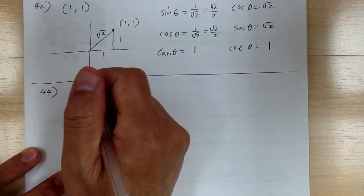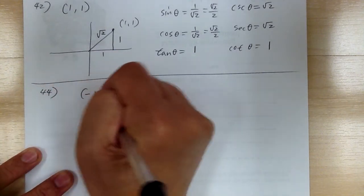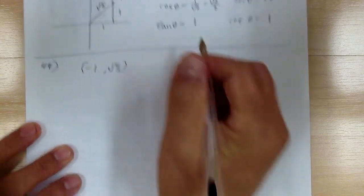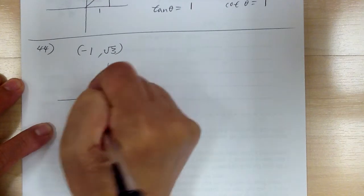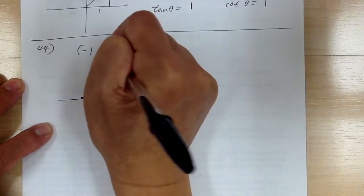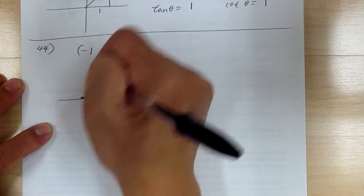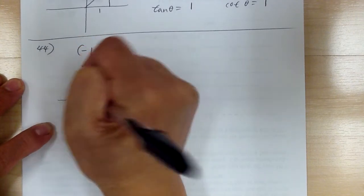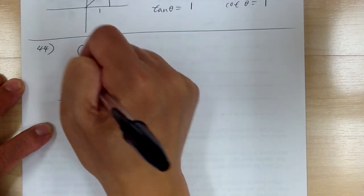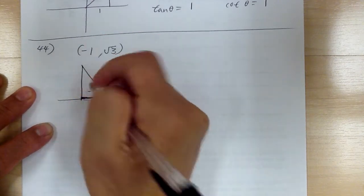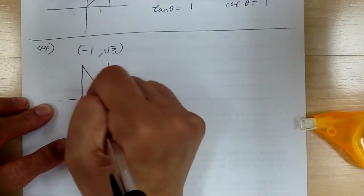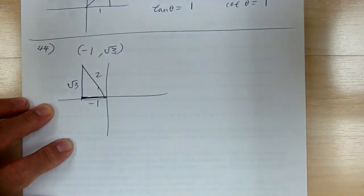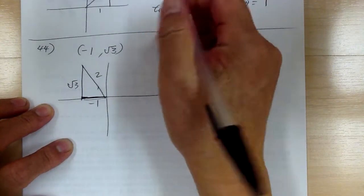Let's go to number 44. You have the coordinate (-1, √3). The x is negative 1, and √3 is about 1.7, so it's a bit longer — make it slightly longer than 1. You might want to relabel your numbers at different places to make it nicer, so this would be 2. Based on this picture, you can get your functions.